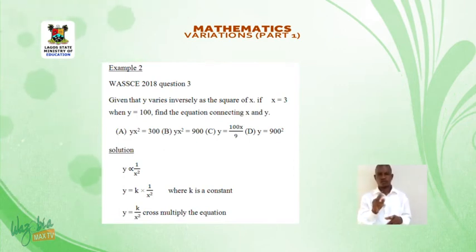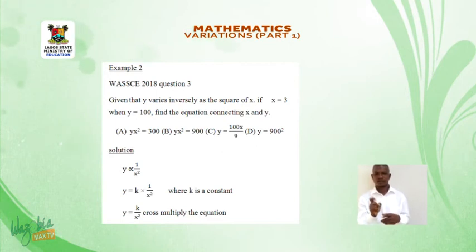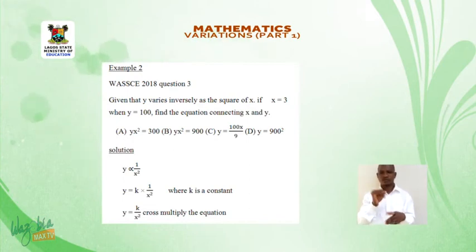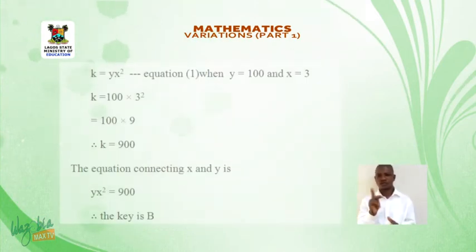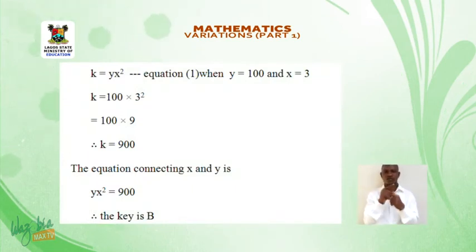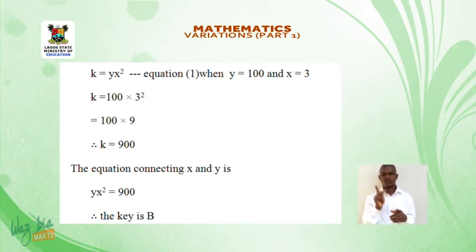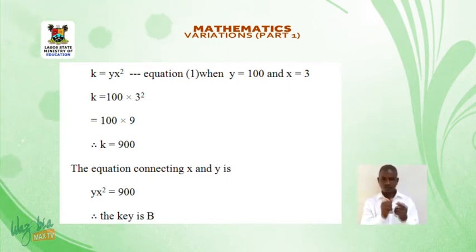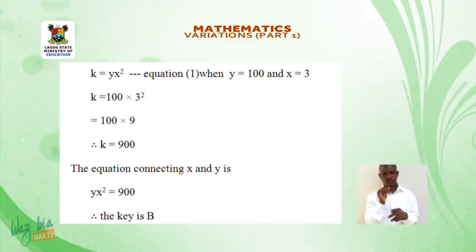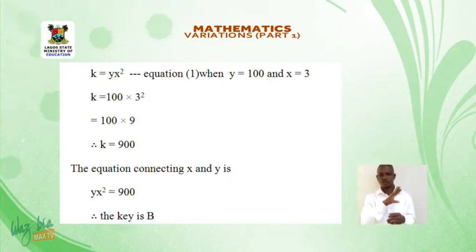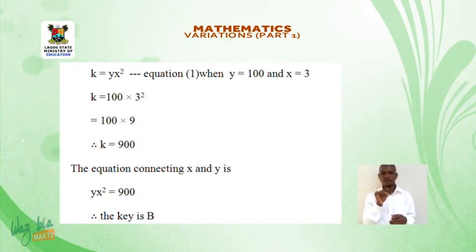Solution. Y varies inversely as the square of x: y = k × (1/x²), where k is a constant. Therefore y = k/x², and cross-multiplying gives k = yx². When y = 100 and x = 3: k = 100 × 3² = 100 × 9 = 900. Therefore the equation connecting x and y is yx² = 900. The answer is b.